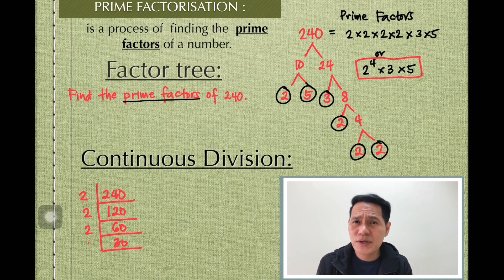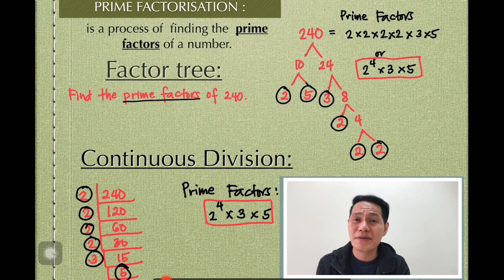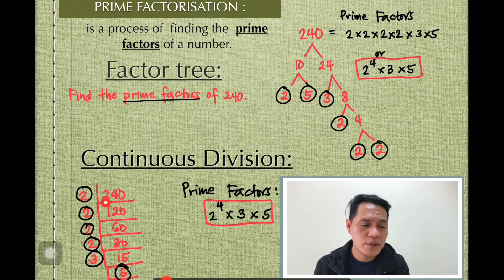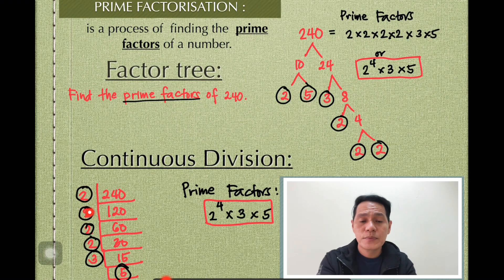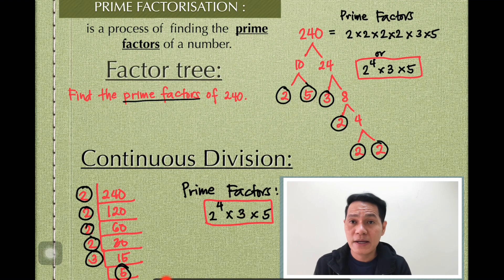Next is continuous division. For 240, you start with the smallest prime number, which is 2 — remember that 2 is the only even prime number. Divide 240 by 2, then bring it down: 120 divided by 2 is 60, then 30, and so on. Encircle the prime numbers on the side. See how many times we repeated 2 — we get 2 to the power of 4, then 3, and then 5. These are the prime factors of 240, presented using continuous division.